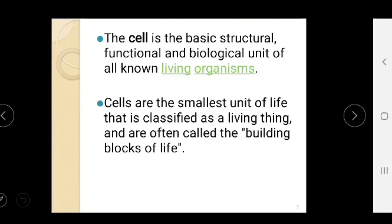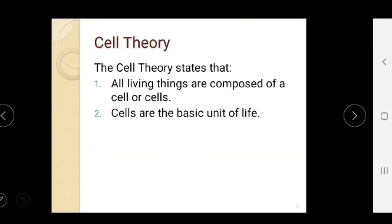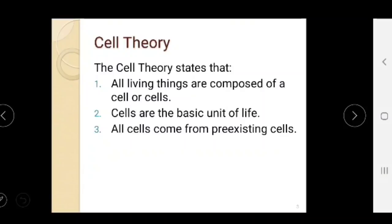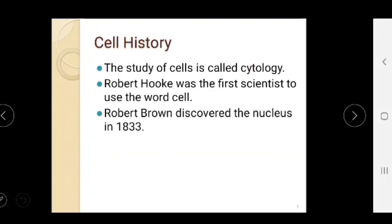What is a cell? A cell is the basic structural, functional, and biological unit of all living organisms. Cells are the smallest unit of life, classified as a living thing, and are often called the building blocks of life. The cell theory states that all living things are composed of one or more cells, cells are the basic unit of life, and all cells come from pre-existing cells.